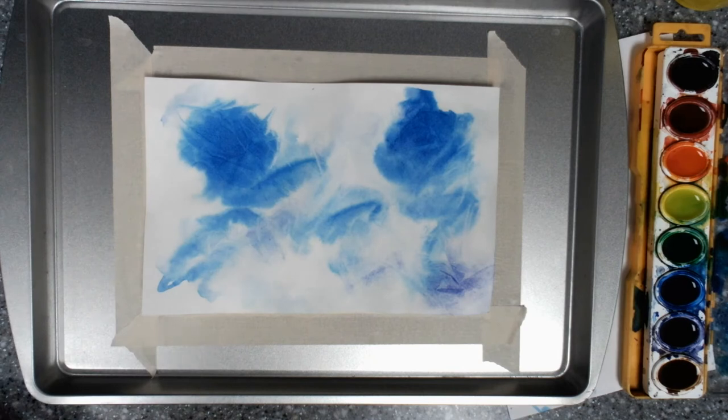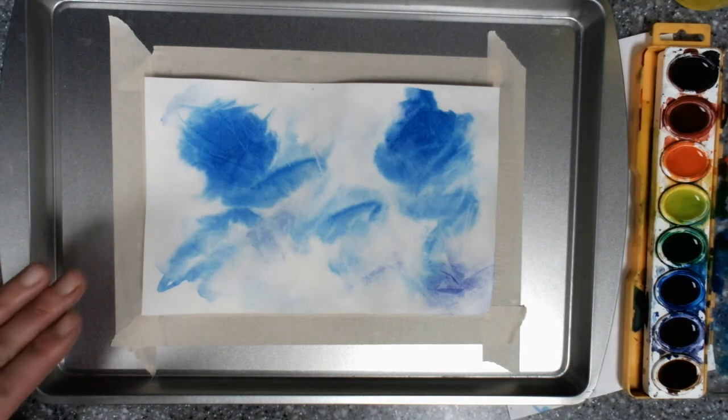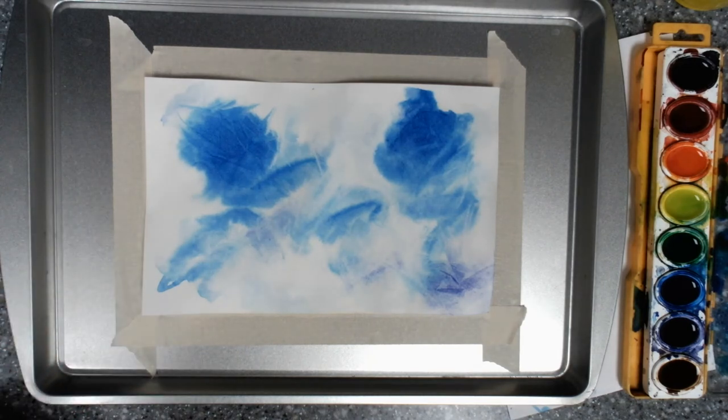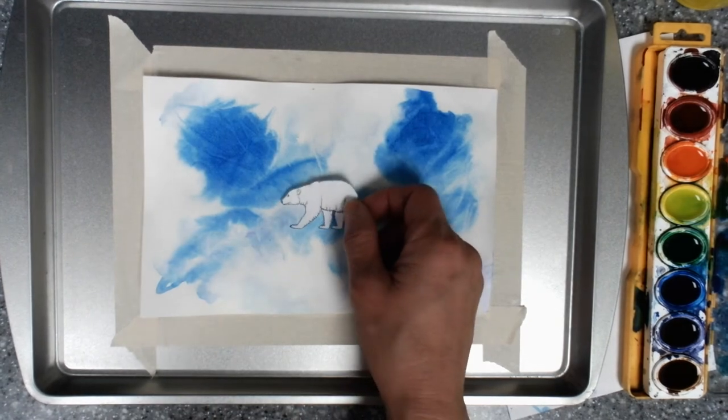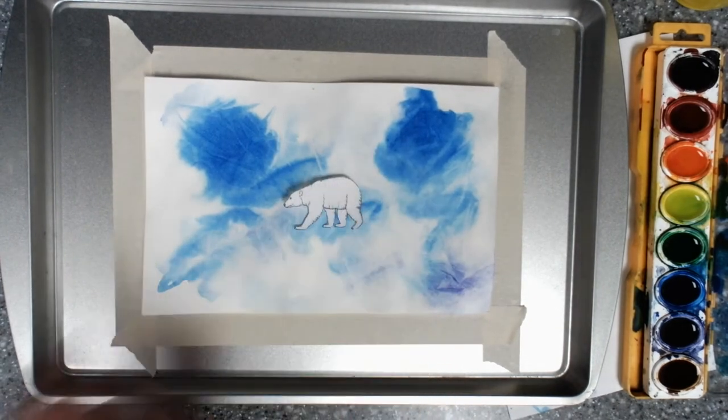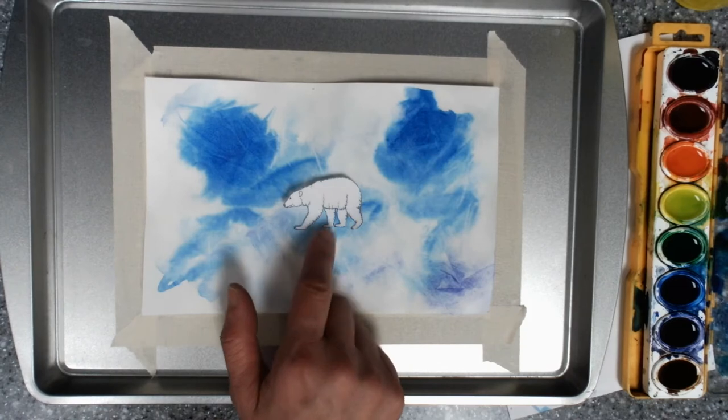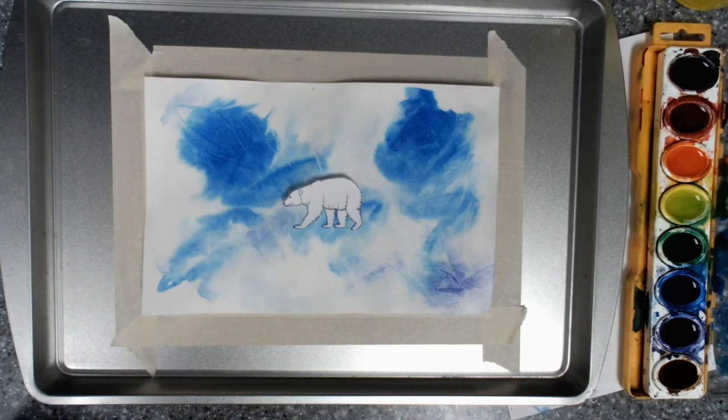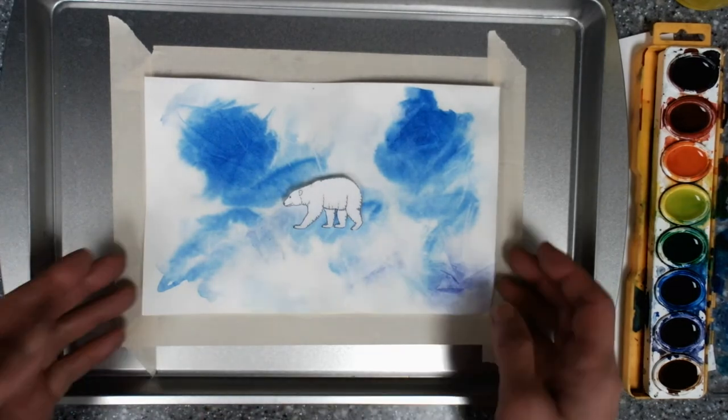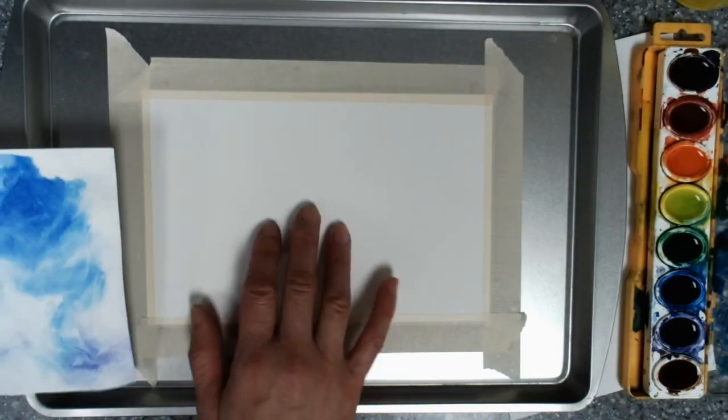The next watercolor painting we will be doing is painting an iceberg for our polar bear. So you have a polar bear to cut out in the direction sheet and you can cut out the polar bear and put her on the iceberg after you paint it.